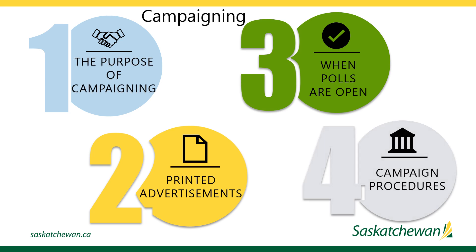Rules regarding proper campaign procedures — such as advertising, canvassing in or near a polling place, bribery, and threats — can be found in the Local Government Election Act 2015. Election candidates that intend on campaigning should review the rules thoroughly and ensure they are followed.